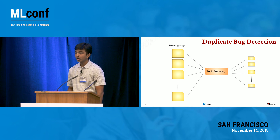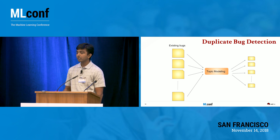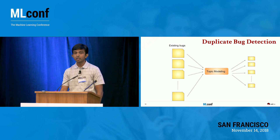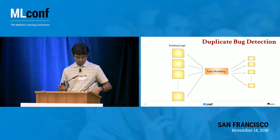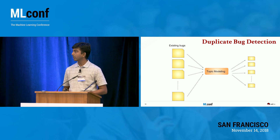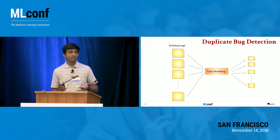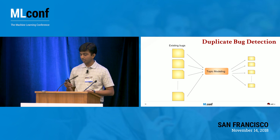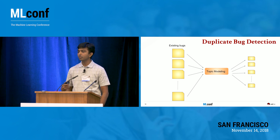You take existing bugs and run them through a topic modeling engine — a decomposition algorithm. You have a set of content from each existing bug and reduce it to a set of topics that best describes the information from each bug. You do this for all existing bugs, train the model, and retain it at the back end.